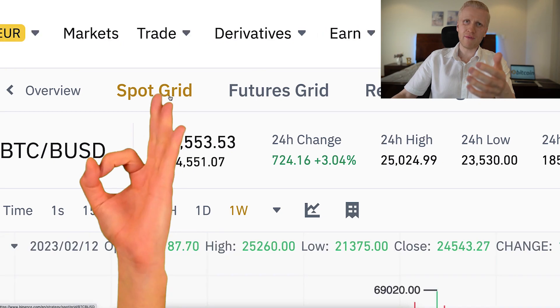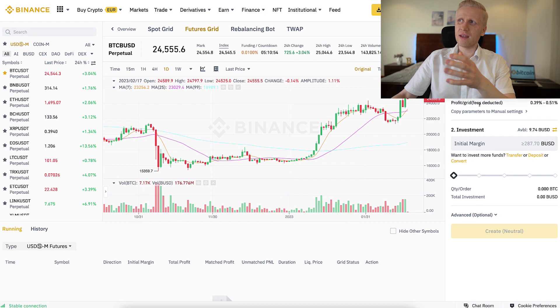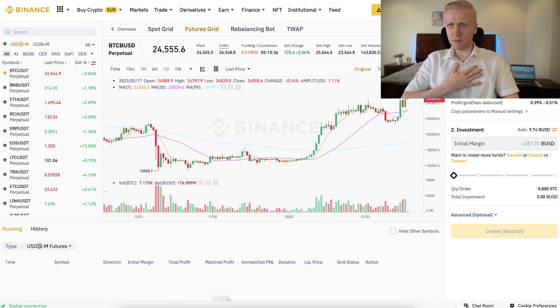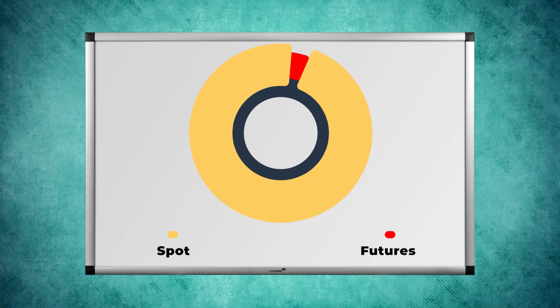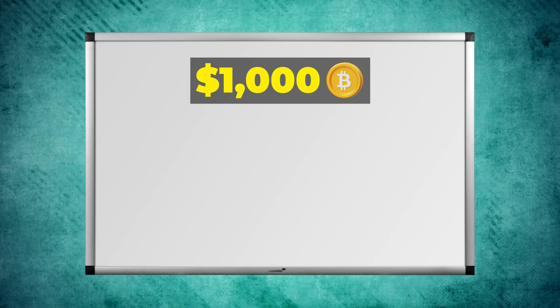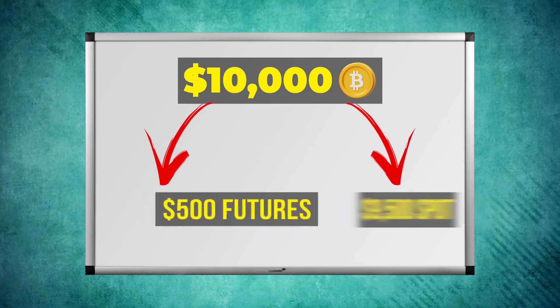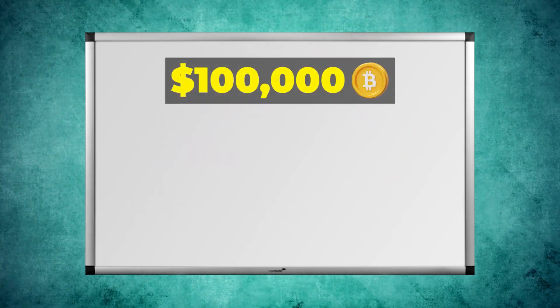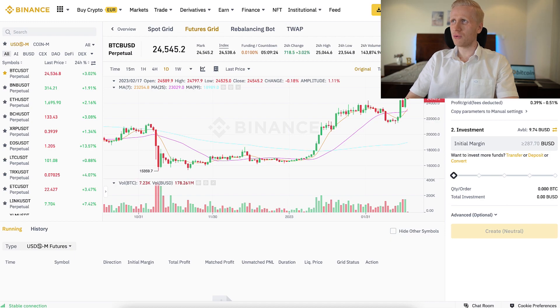When you are using SpotGrid, you don't have a risk of liquidation. But with FuturesGrid, you may get liquidated — meaning you can lose your whole position. My personal opinion is that you only use less than 5% of your portfolio in Futures Trading and the rest in Spot Trading and getting Bitcoin directly. For example, if you have 1000 dollars in Bitcoin, use maximum 50 dollars for Futures Trading. 10,000 in Bitcoin — maximum 500. 100,000 in Bitcoin — maximum 5000 for Futures Trading. That's how we manage risks.